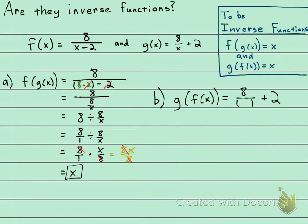And what goes where the x was? The f of x, which is 8 over x minus 2.